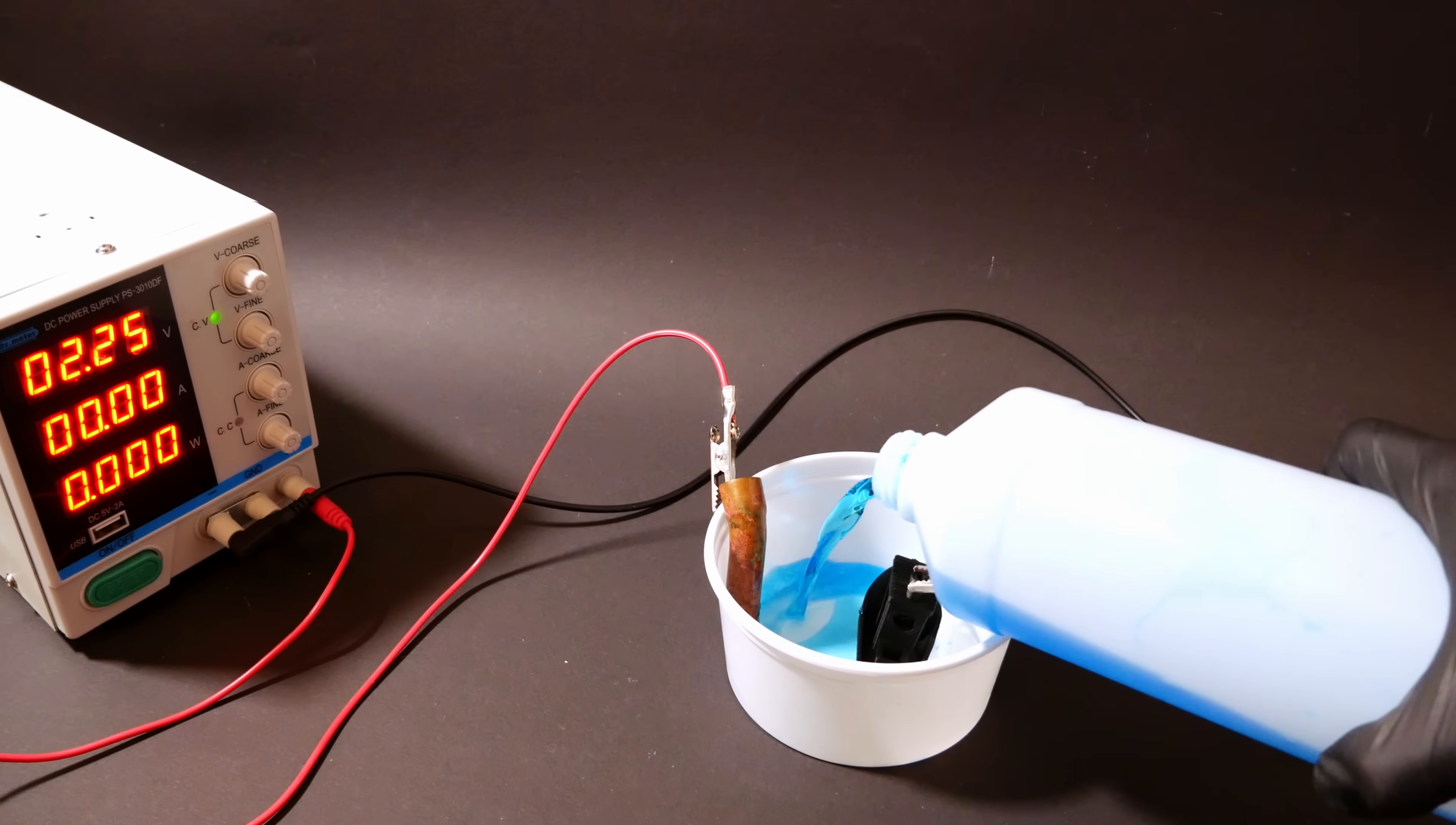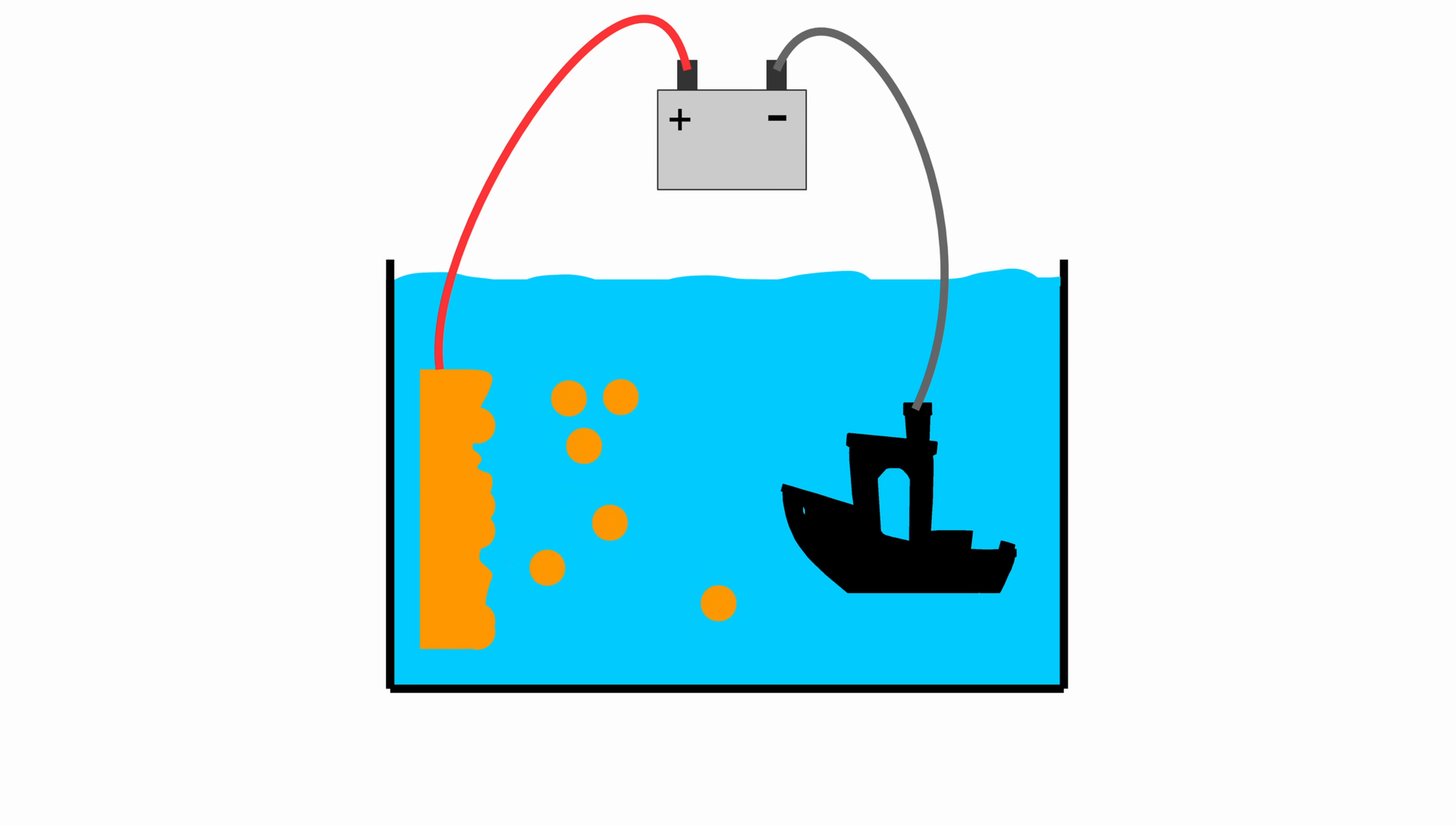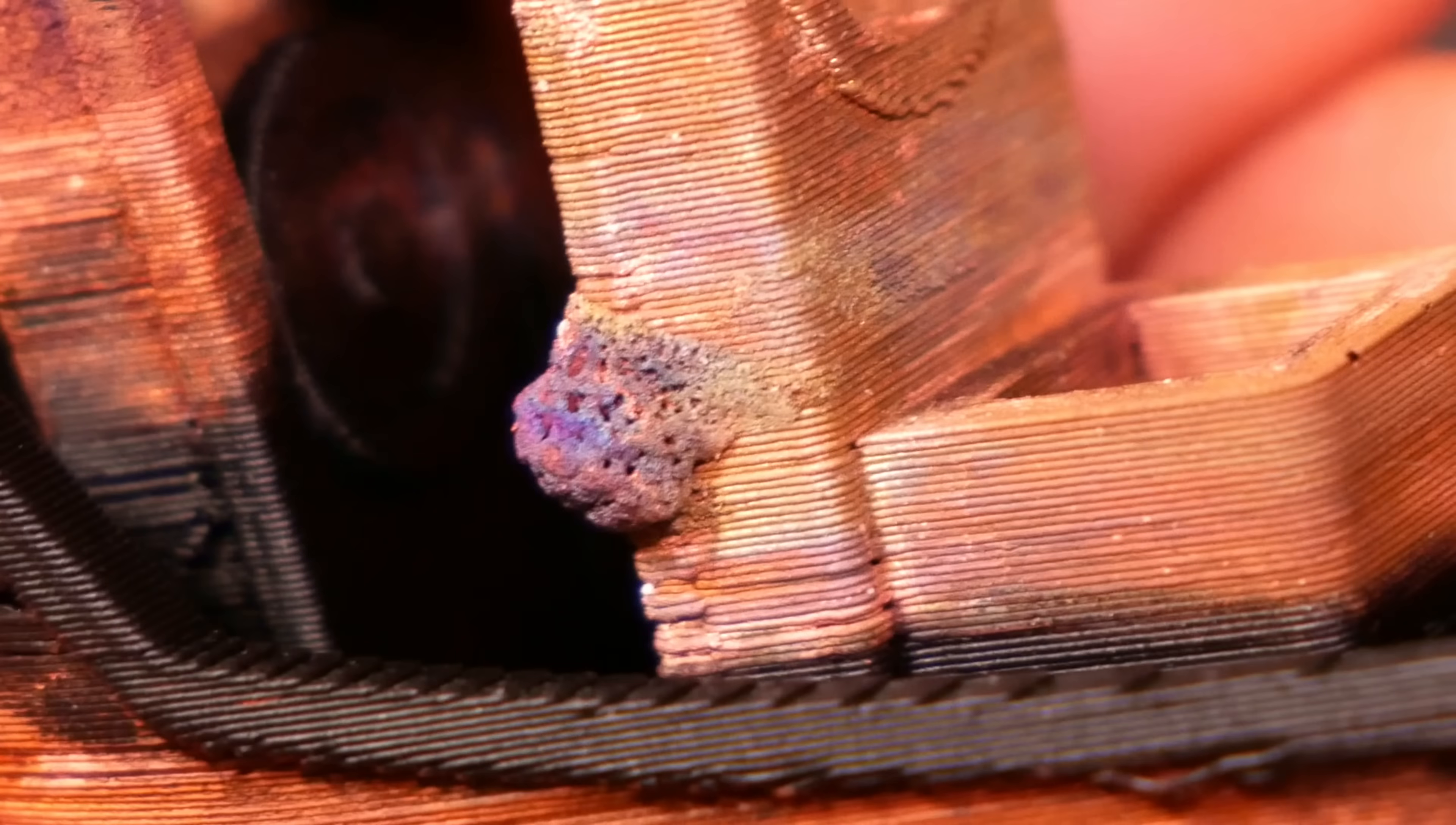Until now, if you would have wanted to electroplate a part with this process, you would have needed to fully submerge the part in electrolytes. The problem with this is that the metal particles can kind of go wherever they want to in the electrolyte. And because of that, it's very difficult to get an even coating across the whole part. So when you try to make a thick metal coating, you end up having entire regions of your part uncoated, while other parts look like this.